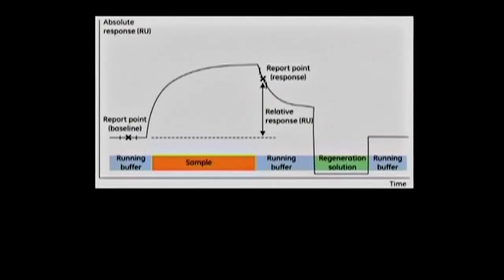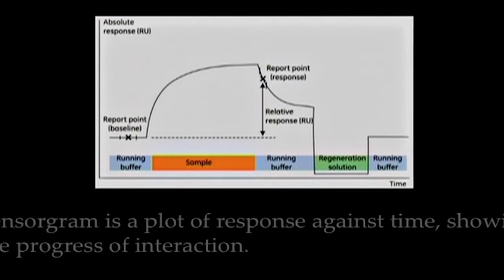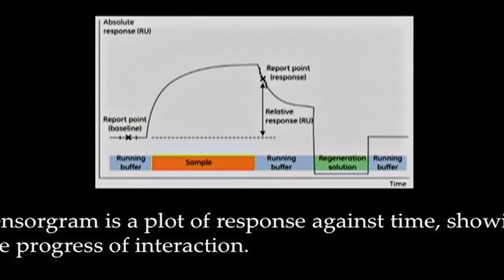Before we analyze the binding data from the experiment, let us look at a typical sensorgram for binding between a ligand and an analyte. A sensorgram as shown here is a plot of response against time showing the progress of interaction. This curve is displayed on the system during the course of experiment. We observe the baseline followed by the injection of analyte which leads to increase in the binding response during the association phase. Just after the stop of the sample injection, we observe report point which records the response on a sensorgram at a specific time averaged over a short time window. This is followed by dissociation phase, regeneration and then back to baseline.